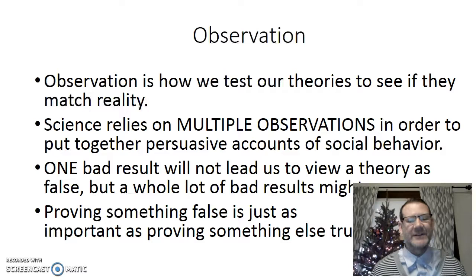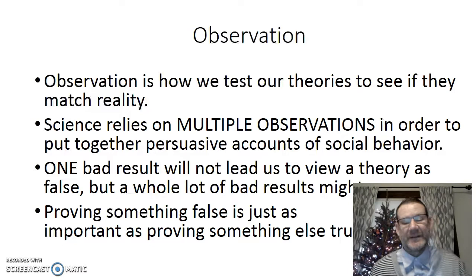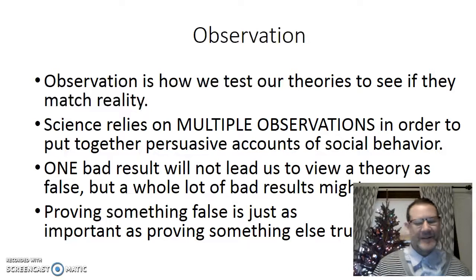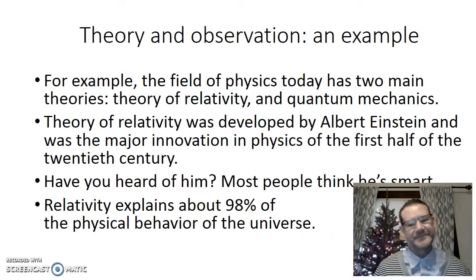On the other hand, if a theory has a lot of observations going against it, we should be wary of that theory. In science, proving something false is just as important as proving something else true. It's not about being right — it's about taking our ego out of the process and trying to figure out what is going on. Without science, we don't have computers and all that great stuff. So let's take an example of how theory and observation work together.